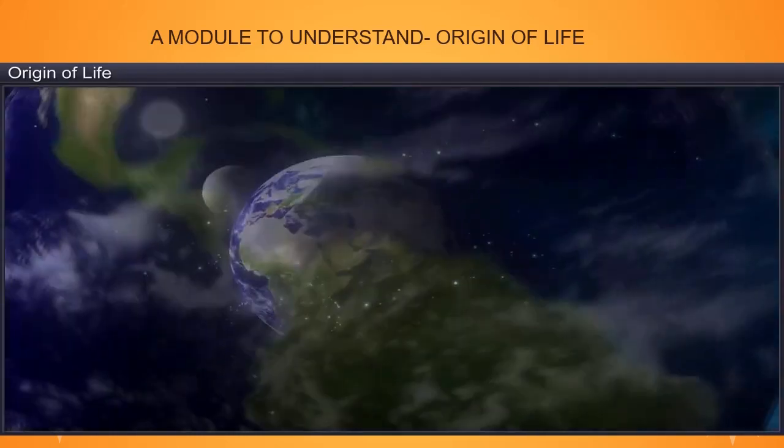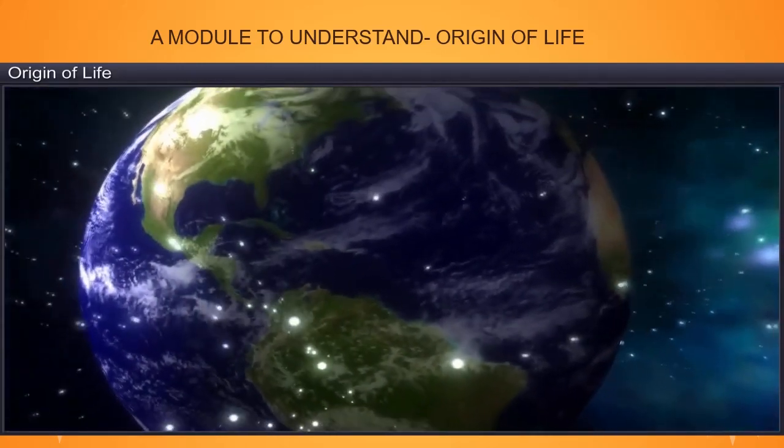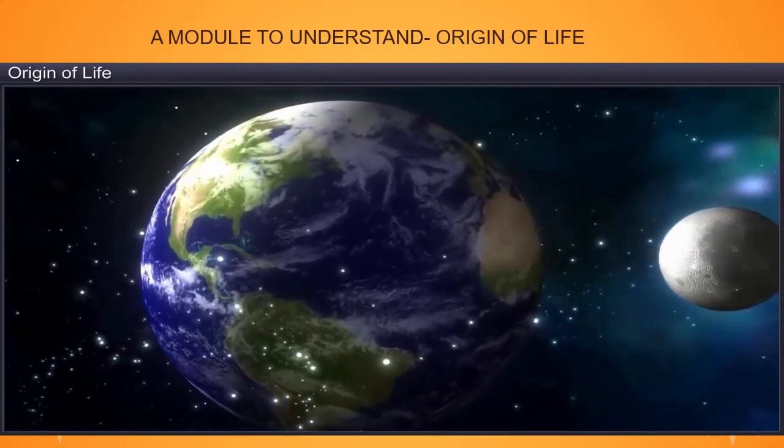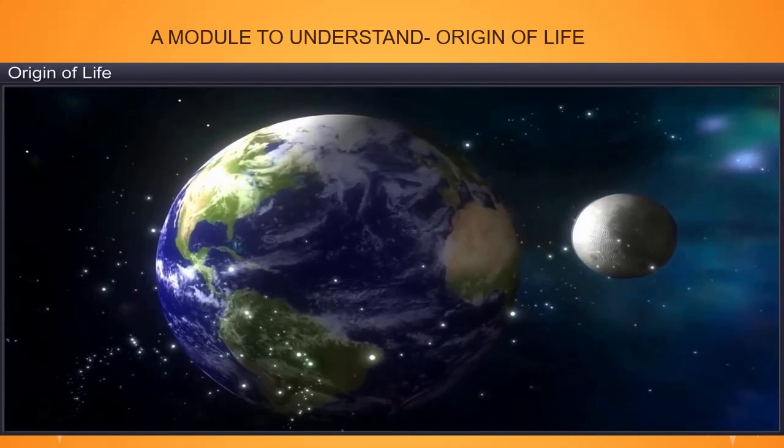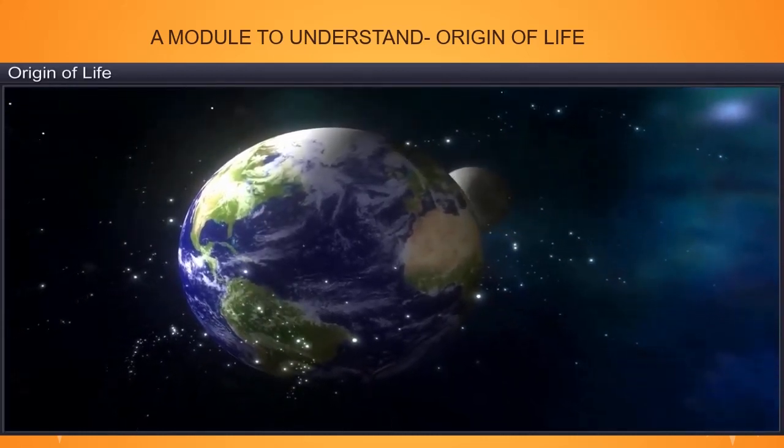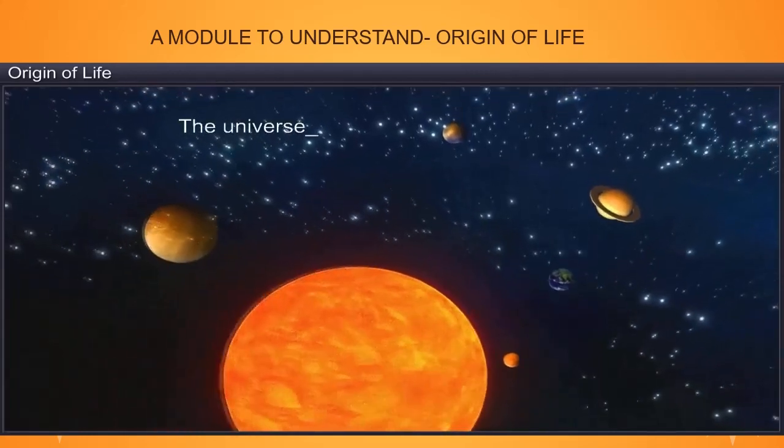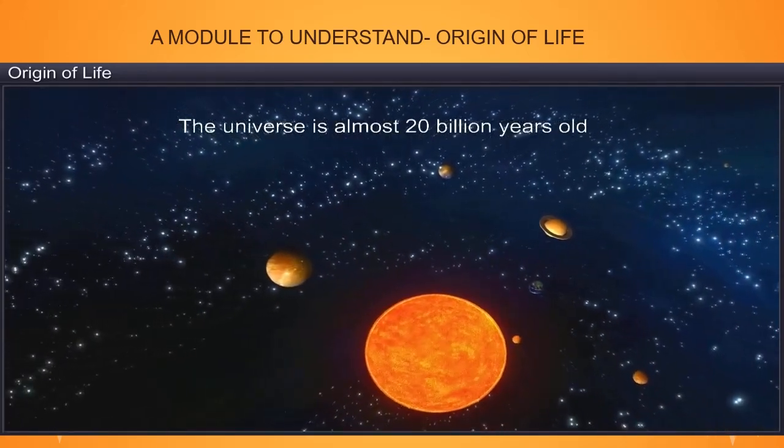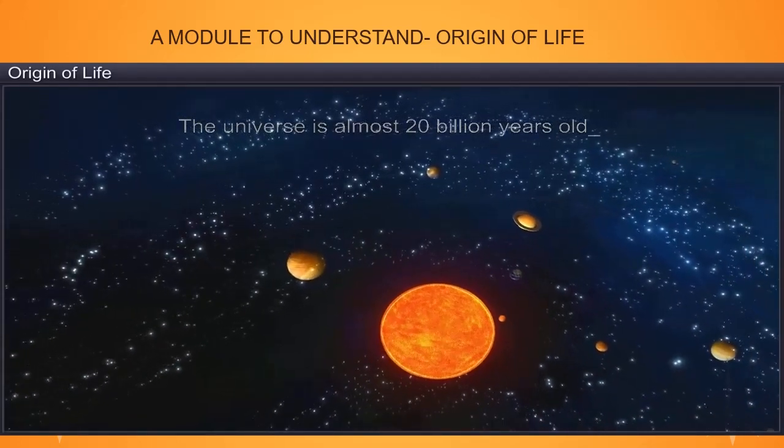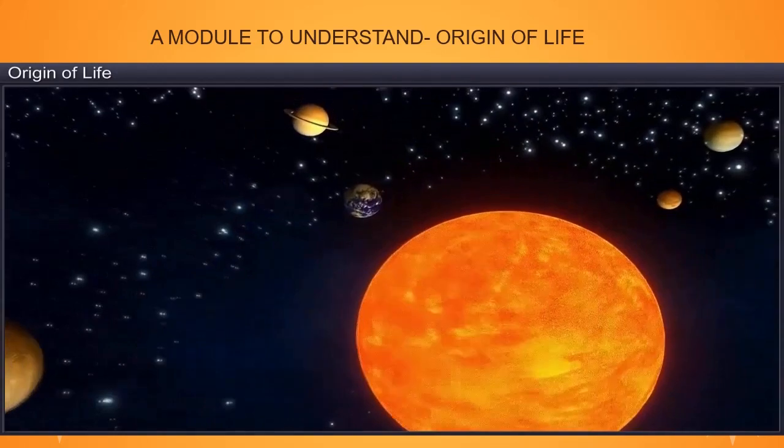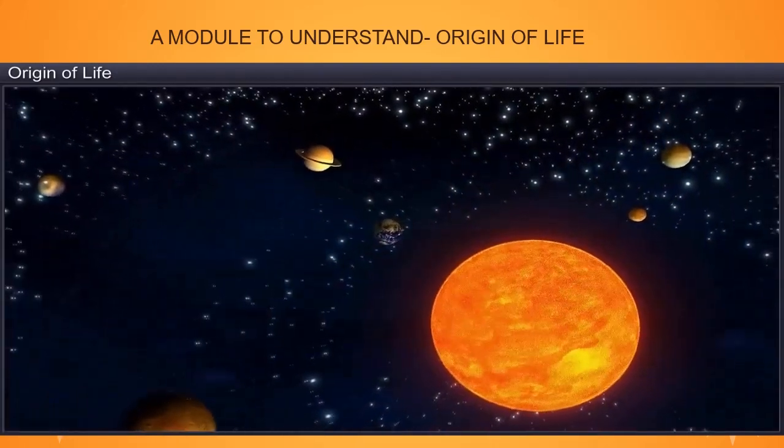The origin of life forms or biodiversity is interlinked with the evolution of the earth, which is again closely associated with the evolution of the universe. The universe is vast, comprises many galaxies and is almost 20 billion years old. The Big Bang theory attempts to explain the origin of the universe.